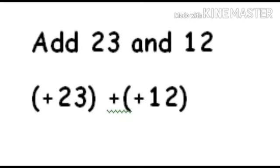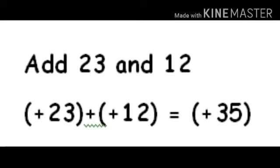Children, shall we solve the problem now? Let's see the first sum: add 23 and 12. We have to add positive 23 and positive 12. Here the integers are with the same sign, therefore we have to add the two numbers and write the same sign. Hence, positive 23 plus positive 12 is equal to positive 35.